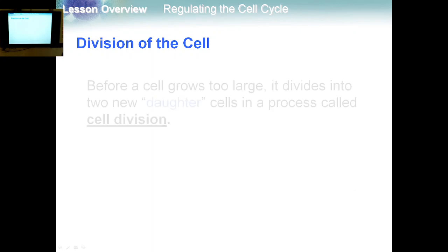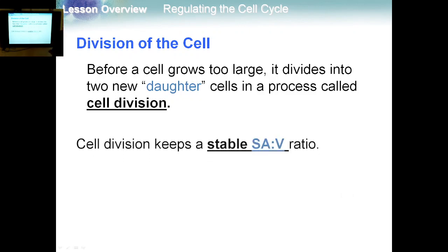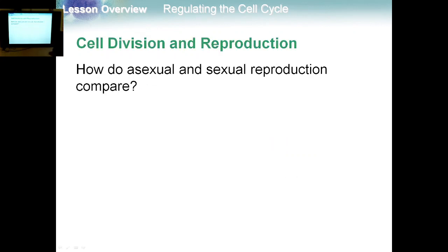Before a cell grows too large, it divides into two new daughter cells. The cell will grow, and once it reaches a specific volume, it will divide to form two new cells through a process called cell division. Cell division keeps a stable surface area to volume ratio — that is the main benefit of cell division. There are two types of reproduction: asexual reproduction and sexual reproduction.